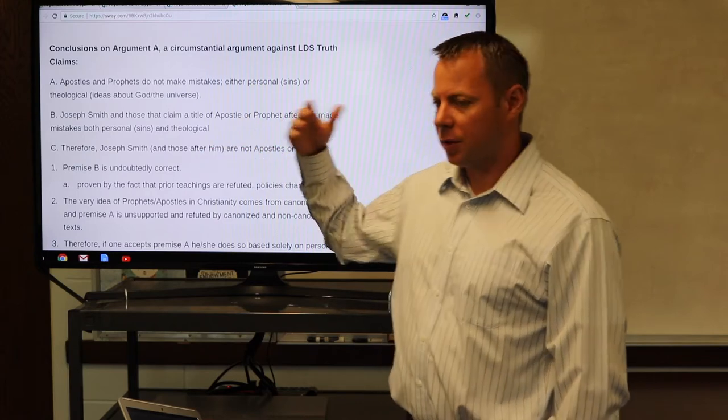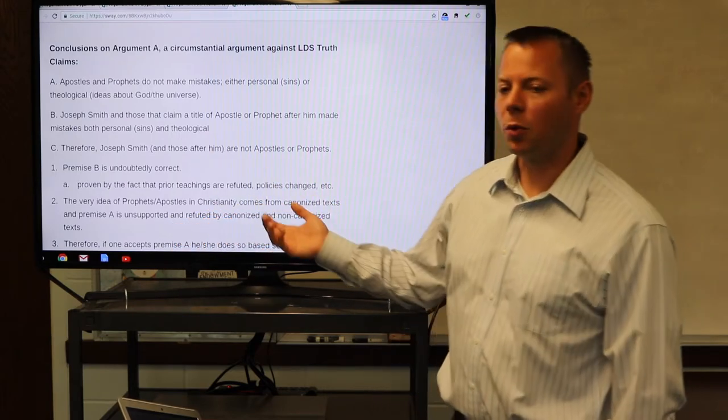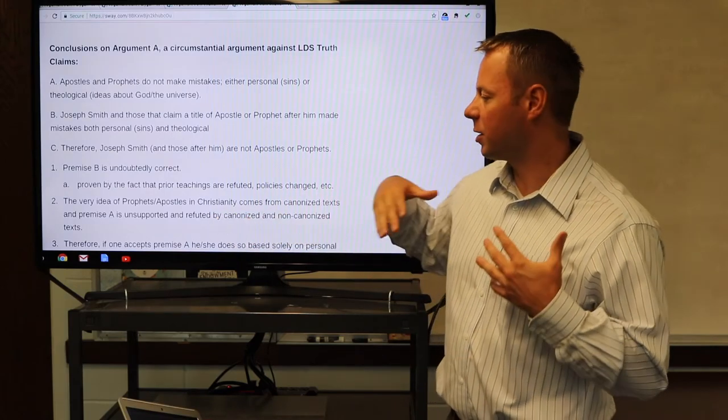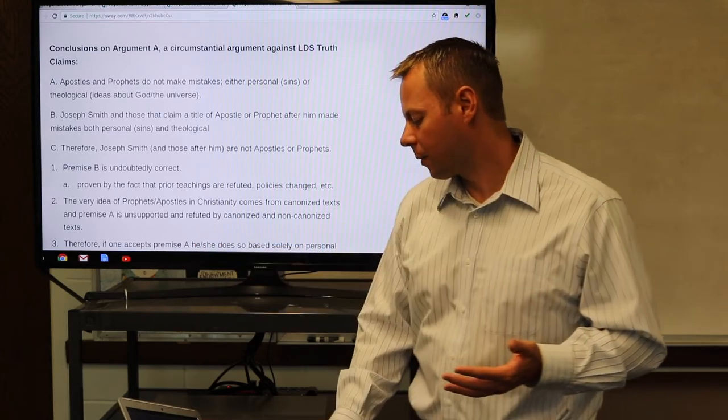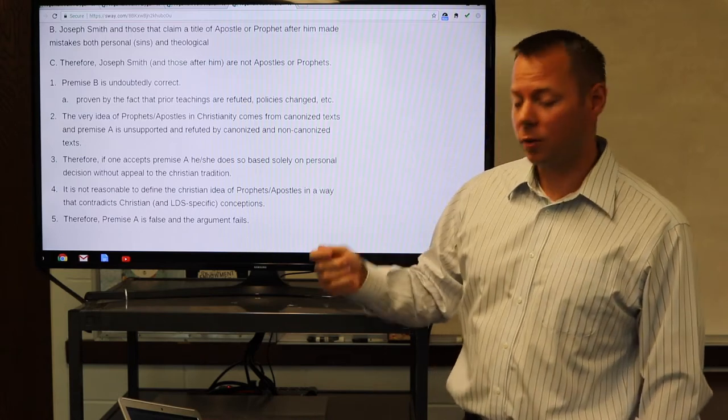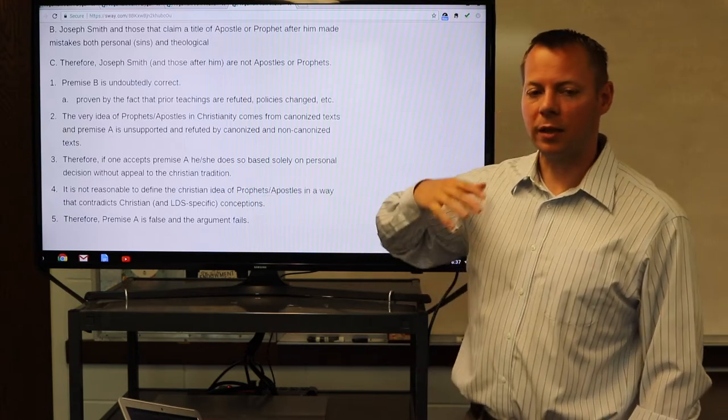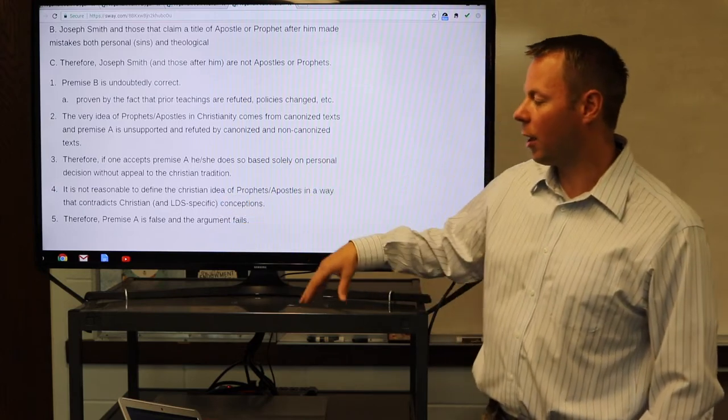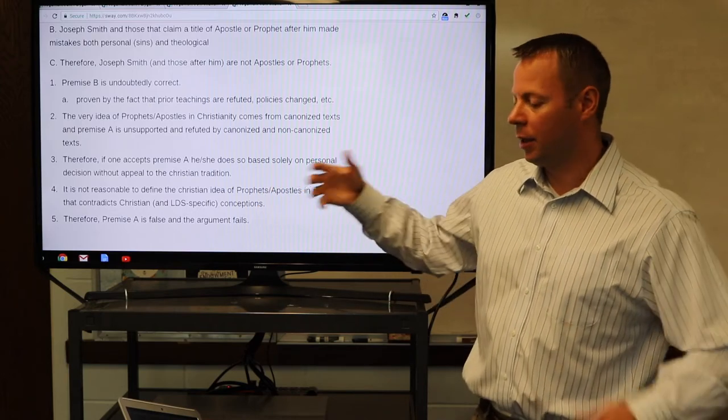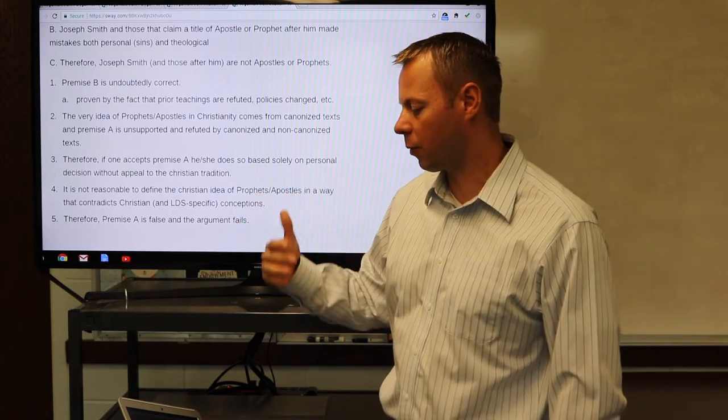Premise B is undoubtedly correct. Mistakes are made both personal and theological. The question comes down to premise A. Is it supported? I showed multiple examples from both canonized and non-canonized texts that show that premise A is not supported. In fact, it's specifically refuted. If one accepts premise A, he or she does so based solely on their personal opinion without appeal to the Christian tradition. I argue that it's not reasonable to define the Christian idea of a prophet or apostle in a way that actually contradicts the Christian and LDS-specific conceptions of that term.